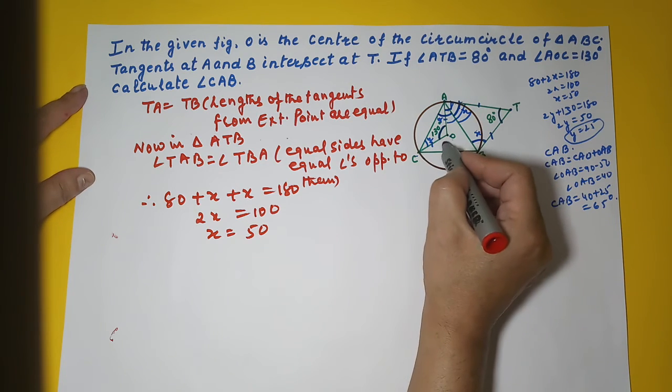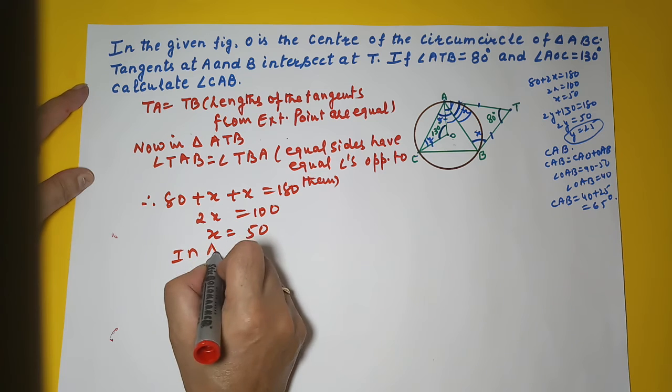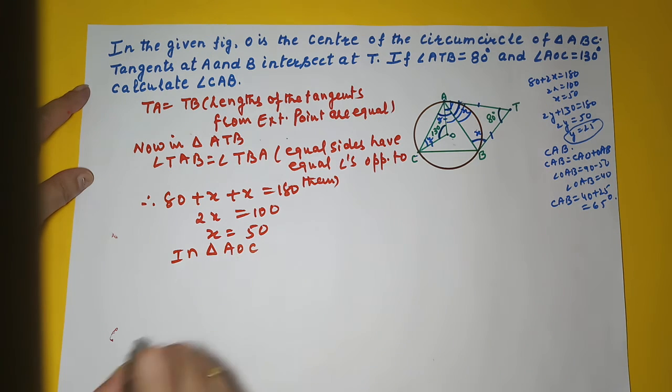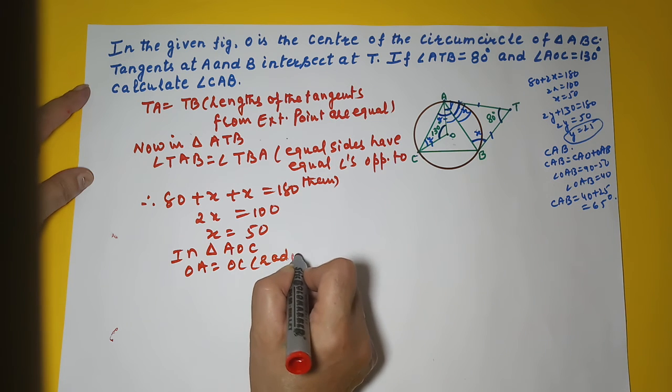Now come back to this triangle AOC. In triangle AOC, OA is equal to OC. Why? Radii of the same circle.